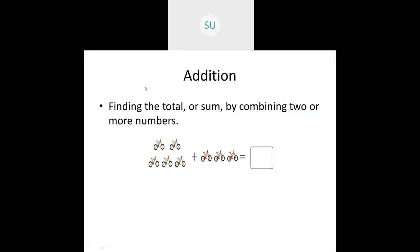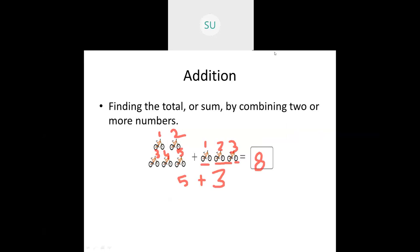Now here I have cycles — one group and two groups of cycles. We have to find the total number of cycles. So we will count and add. This is the first method: counting and adding. In the first group I have one, two, three, four and five cycles. In the second group I have one, two and three cycles. So five plus three — we continue counting after five: six, seven and eight. In total I have eight cycles.